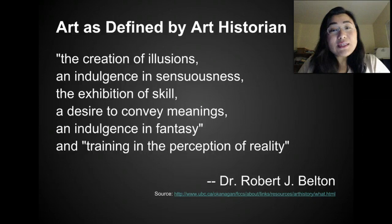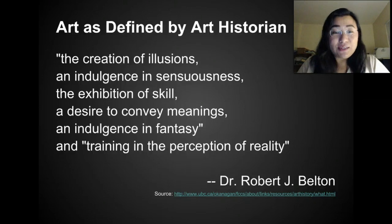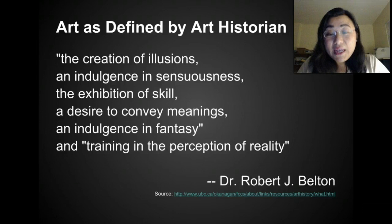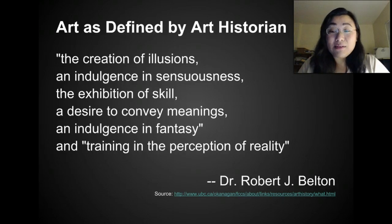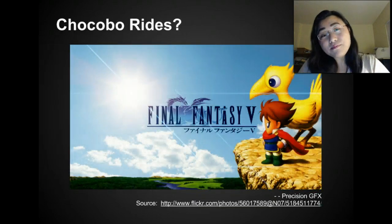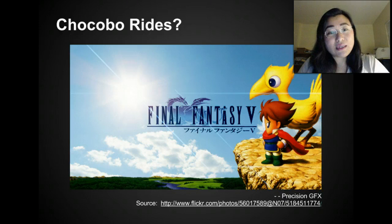Now, here's a definition of art by an art historian. He says: the creation of illusions, an indulgence of sensuousness, the exhibition of skill, a desire to convey meanings, an indulgence in fantasy, and training in the perception of reality. That was by Dr. Robert J. Belton. So, perception of reality.